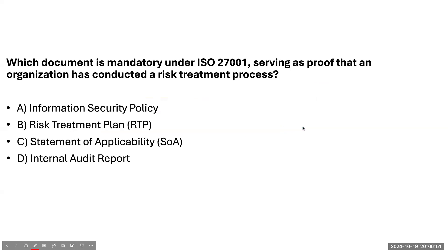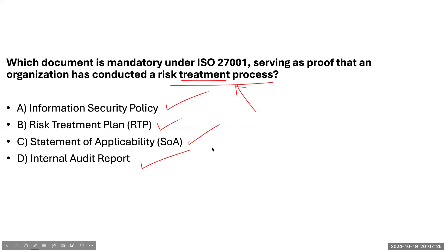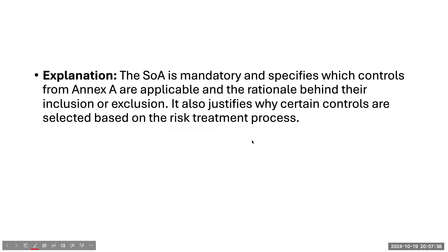The next question: which document is mandatory under ISO 27001 serving as proof that an organization has conducted a risk treatment process? Is it the information security policy, the risk treatment plan, the Statement of Applicability, or the internal audit report? The correct answer is the Statement of Applicability. It specifies which controls from Annex A are applicable and the rationale behind their inclusion or exclusion, justifying why certain controls were selected based on the risk treatment process.